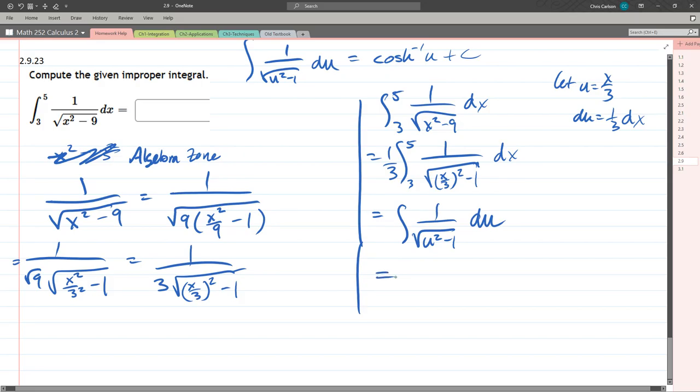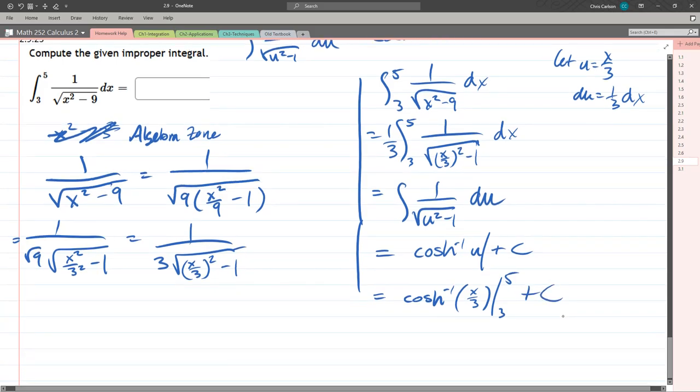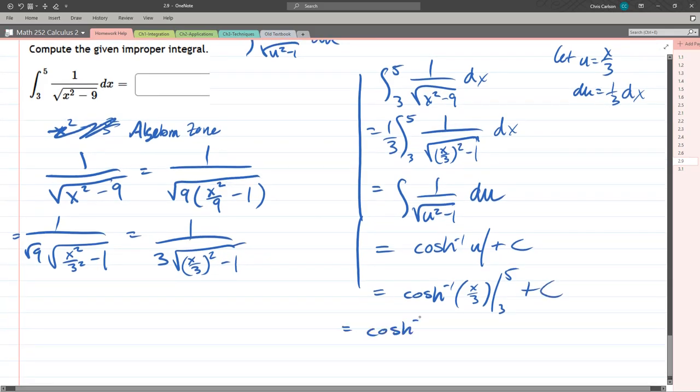From here, what are we doing? We're ready to use, we have exactly this on the left at the top. This is cos hyperbolic inverse u plus c. Now I haven't written in the endpoints yet because we're over in a different variable called u. So let's unsubstitute. So x over 3. Now we're going from 3 to 5 plus c.